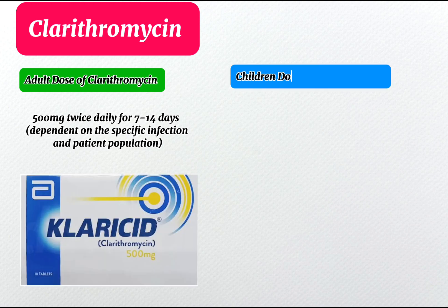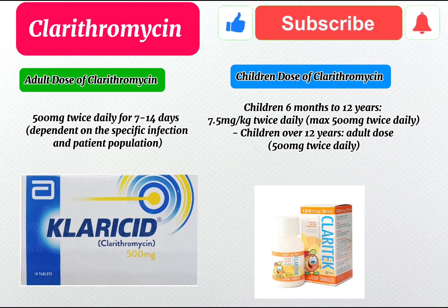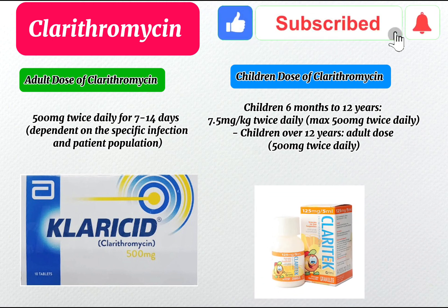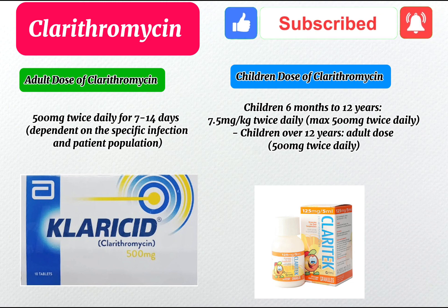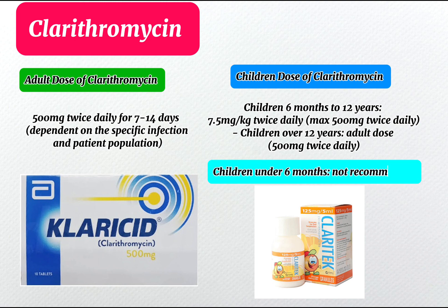Children dose of clarithromycin: Children 6 months to 12 years — 7.5 mg per kg twice daily, maximum 500 mg twice daily. Children over 12 years — adult dose, 500 mg twice daily. Children under 6 months — not recommended.